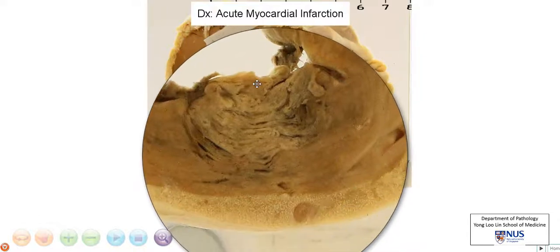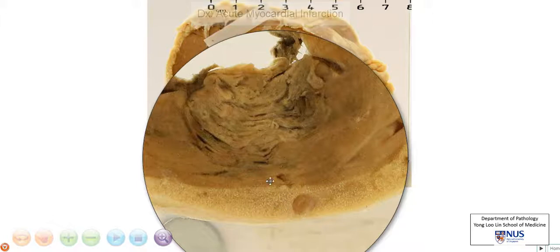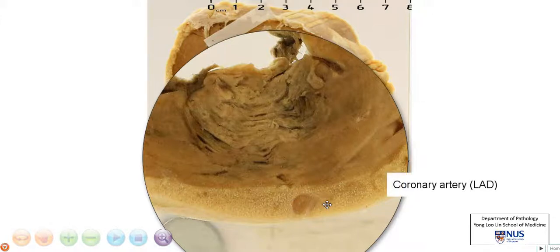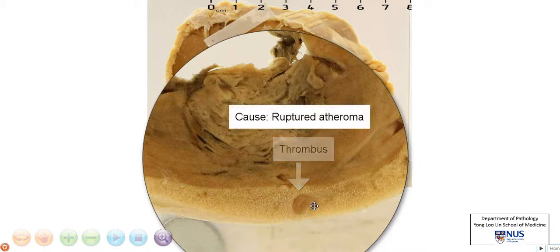Now let's look closely and see whether we can find the cause. If you look in the pericardial fat here, there is a vessel that has been cut transversely. This is the left anterior descending coronary artery. One of the commonest causes of myocardial infarction is occlusion of the coronary arteries. This coronary artery is actually occluded by a thrombus, and the cause of the thrombosis is usually that of a ruptured atheromatous plaque.